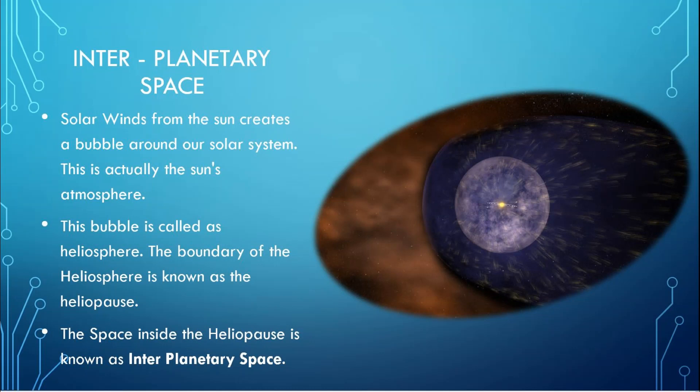Solar winds from the Sun creates a bubble around our solar system which is actually the Sun's atmosphere. This bubble is known as the heliosphere and its boundary is known as the heliopause. The space inside the heliopause is known as the interplanetary space.